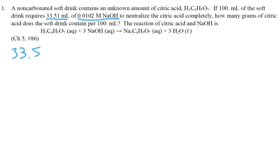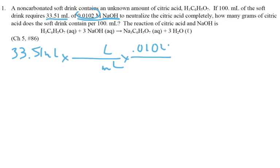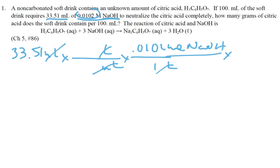So we're going to start with 33.51 milliliters of NaOH. Then we're going to go from milliliters to liters. We can use the molarity as a conversion factor — 0.0102 moles of NaOH per liter. I've now figured out moles of NaOH. If I know moles of NaOH, I can figure out moles of citric acid.